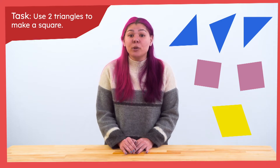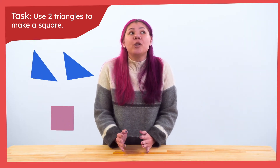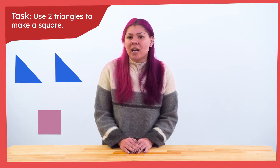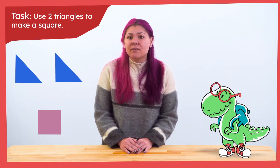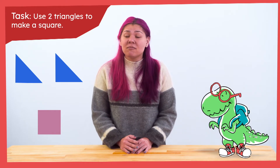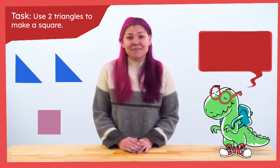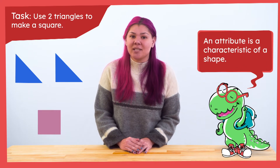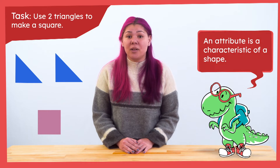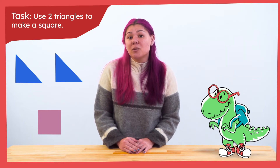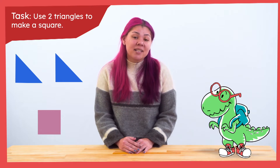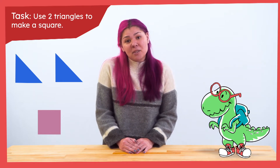I heard someone say that the blue shapes are triangles. How do we know the blue shapes are triangles? What attributes does a triangle have? An attribute is a characteristic of a shape. An example would be that a square has four sides, so the number of sides is one of a shape's possible attributes. There are other attributes that a shape can have, such as side lengths, number of angles, and types of angles.